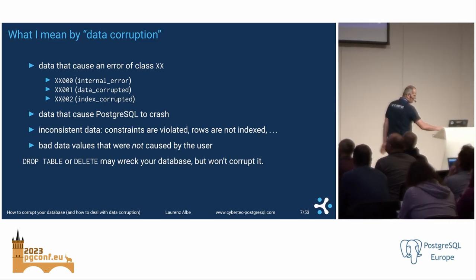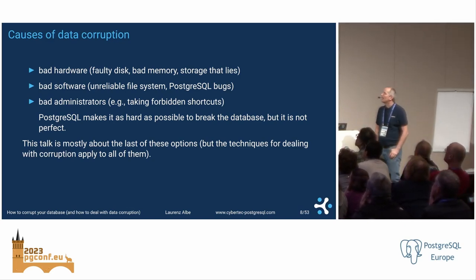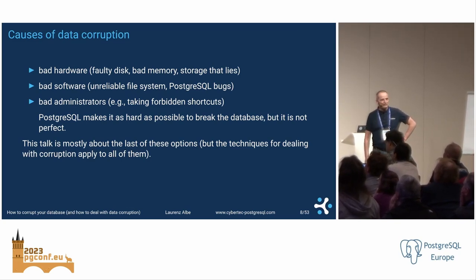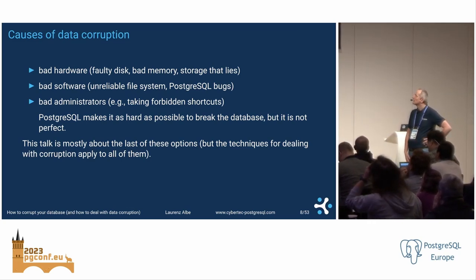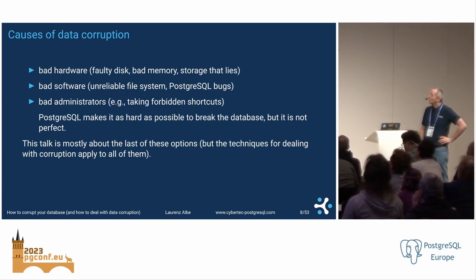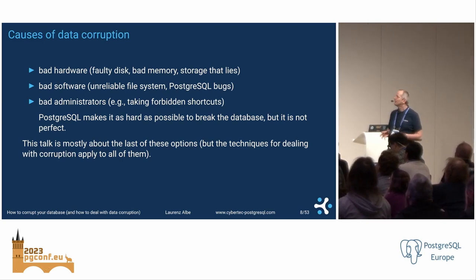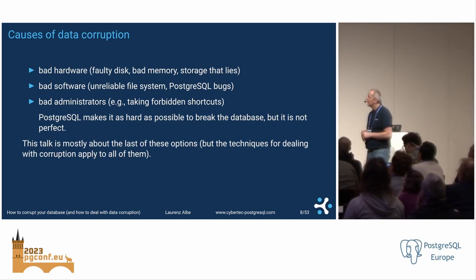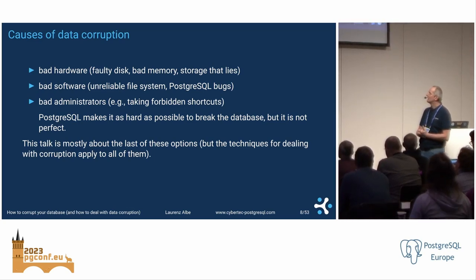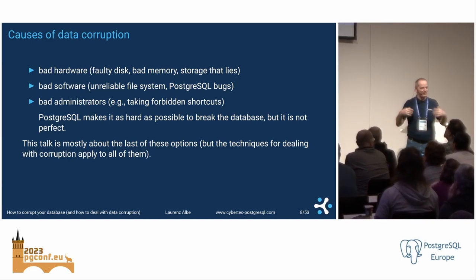What could cause data corruption? Most often it's bad hardware — disk, memory, stuff like that. It could be a software bug in the operating system, file system, or even in Postgres. But what I'm going to focus on is bad administrators — the problem behind the keyboard. Postgres tries to be foolproof, but fools are always better. There are a couple of things you can do wrong, and that's what I'm going to talk about.